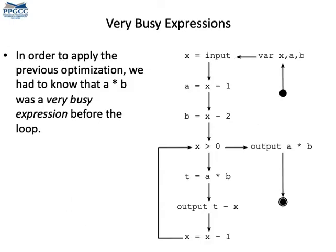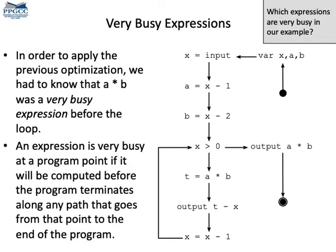Anyways, this expression A times B is very busy right before the loop. Indeed, we say that an expression is very busy at a program point if it will be computed no matter which path we take after that program point. Can you tell me which expressions are very busy in this program? Just as an exercise. You can stop the video and try to pinpoint very busy expressions.